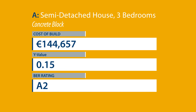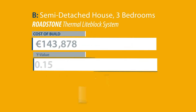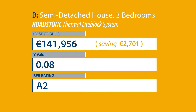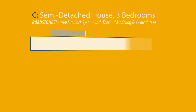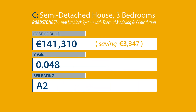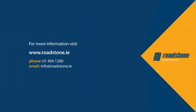The original cost to build this A2 rated semi-detached house was €144,657. Option B provides cost savings of €2,701, requiring the use of Roadstone thermal light block along with Roadstone ACDs which are free to download from the Roadstone website. By fully availing of Roadstone thermal light block along with Roadstone's Y-Value calculation service, the same A2 rated house can now be built for €141,310, producing a build cost saving of €3,347 while still maintaining an A2 rated house. Roadstone Limited — driving cost saving through innovation.